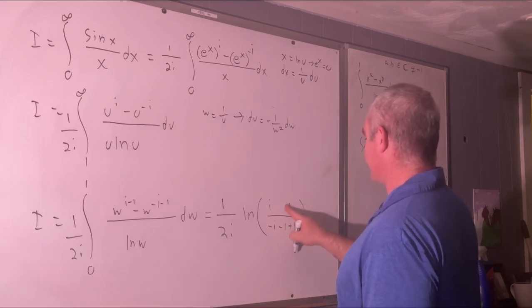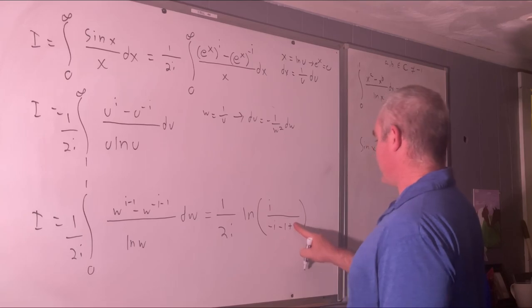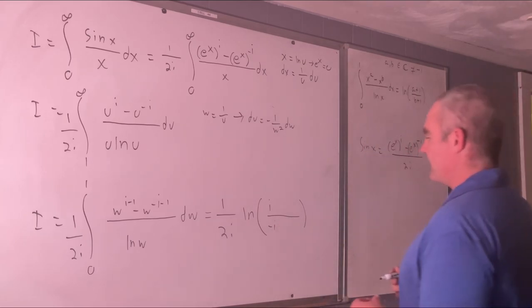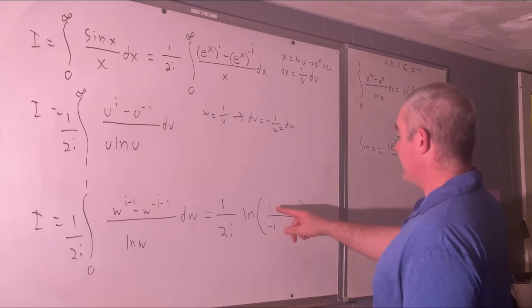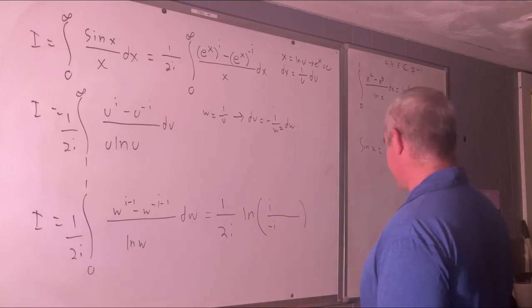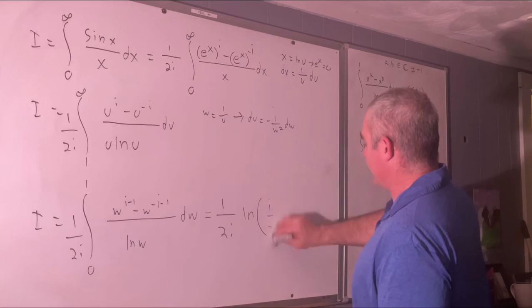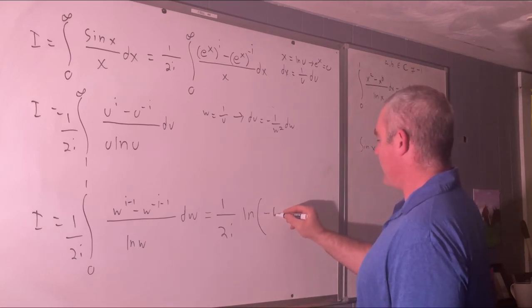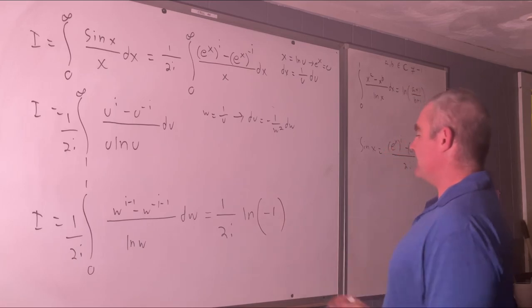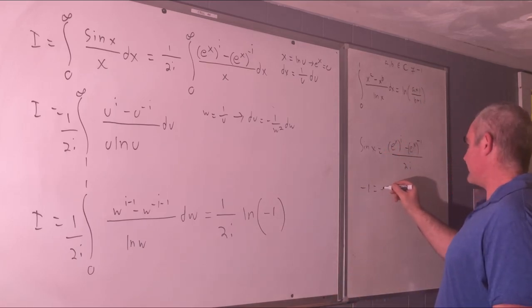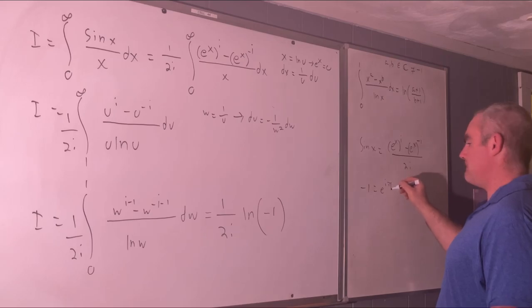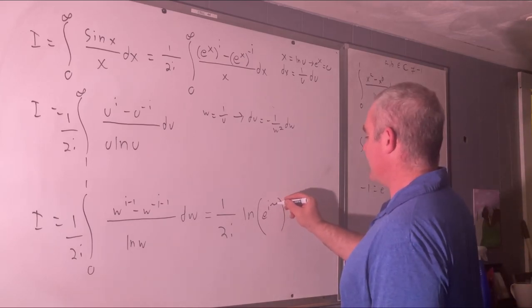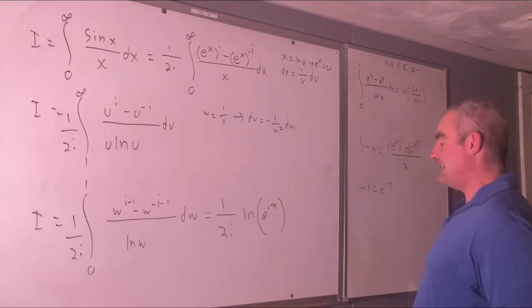Minus 1 plus 1 cancels. Minus 1 plus 1 cancels. We are left with just the natural log of negative 1. i over negative i is just negative 1. So we have natural log of negative 1. Well, negative 1 is famously equal to e to the i pi. So we'll write that in there. E to the i pi. Natural log and e cancel. We're just left with i pi.